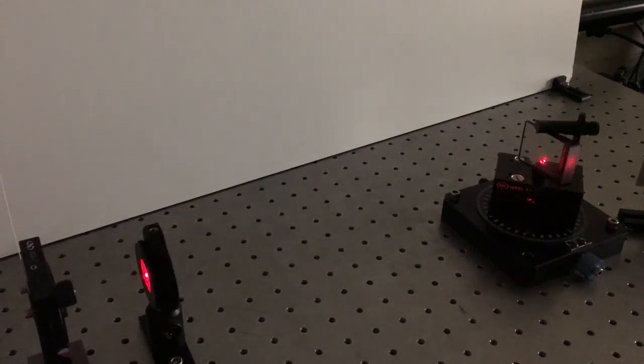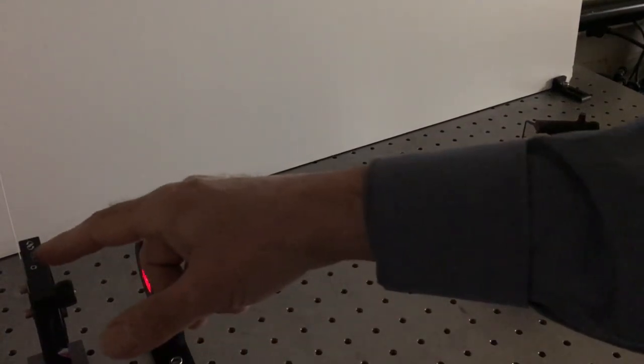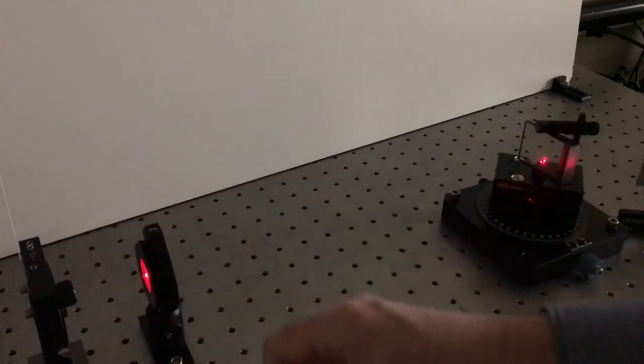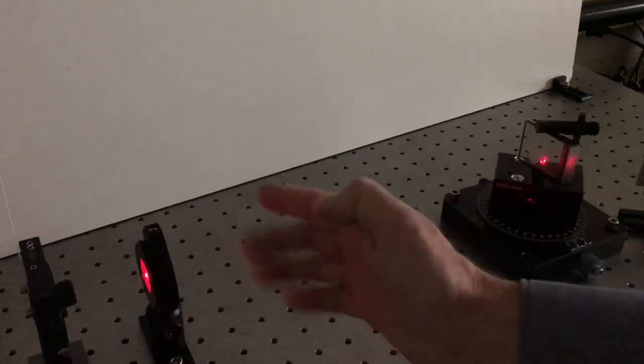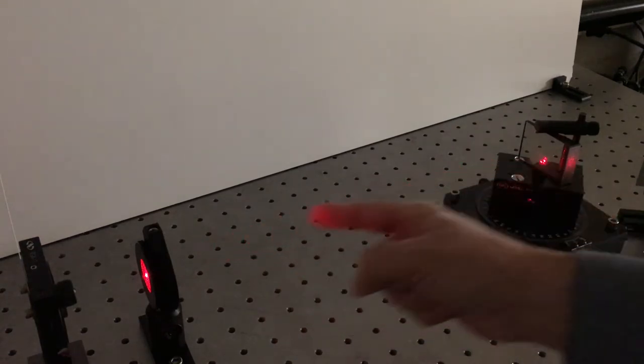Here is our setup for measuring Brewster's angle. Over here we have our linear polarizer followed by a quarter wave plate set at the angle to give us circularly polarized light.